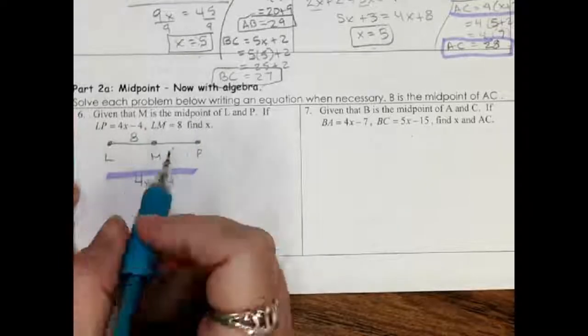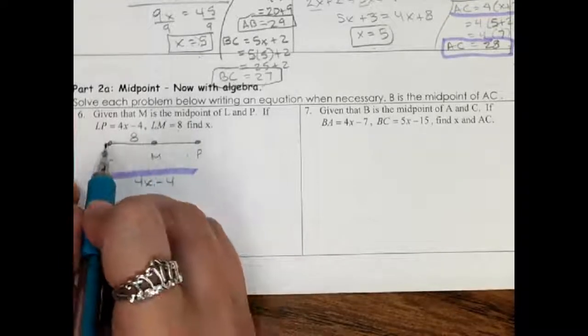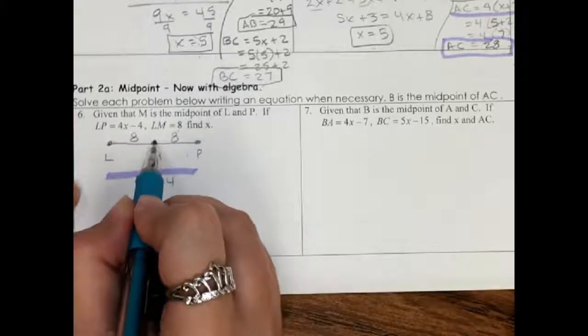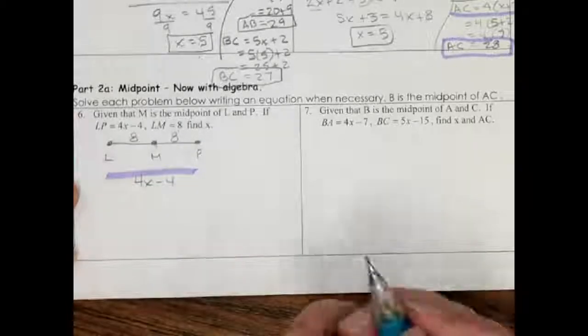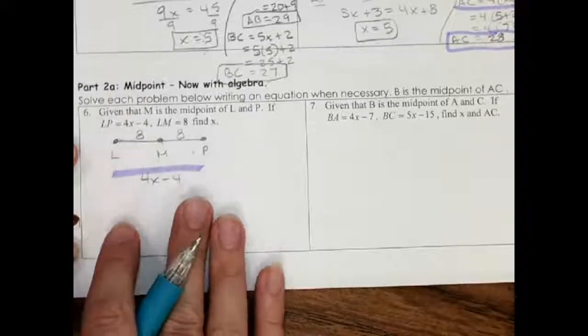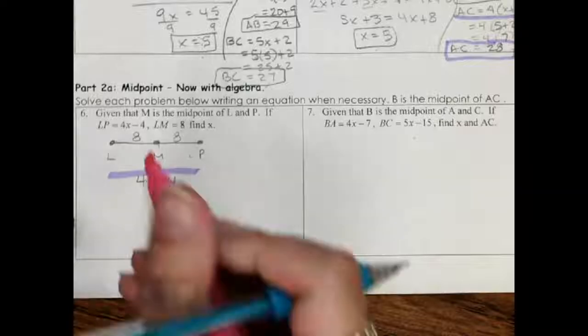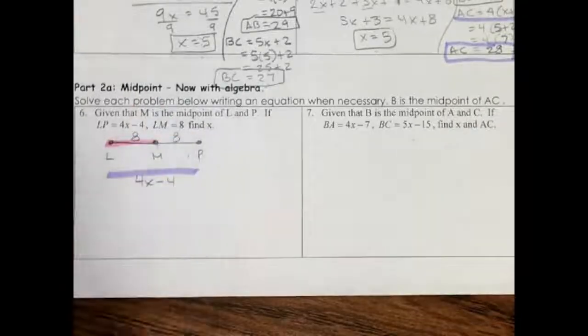Well, if this is the midpoint, that means that this side is 8 and this side is 8. They have to be equal for this to be the midpoint. So now that I have this labeled, now it is exactly like what we did up there. I just do the little part plus the little part equals the big part.